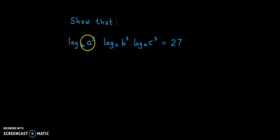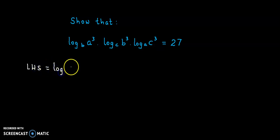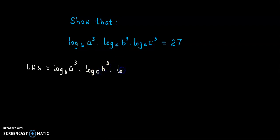We need to prove that log of a cube to the base b, into log of b cube to the base c, into log of c cube to the base a is equal to 27. On the left hand side we can write: log of a cube to the base b into log of b cube to the base c into log of c cube to the base a.